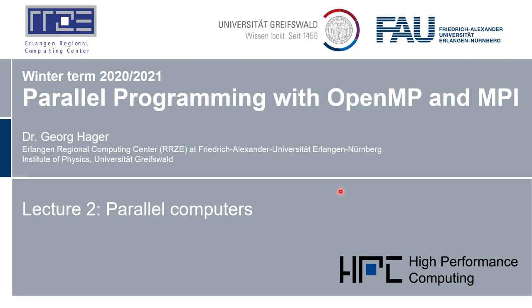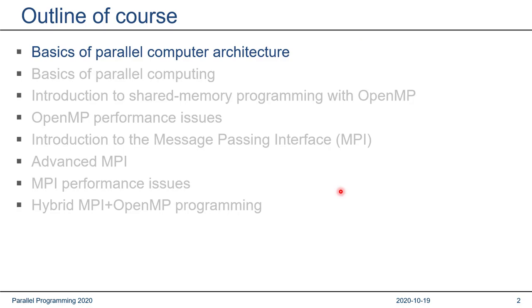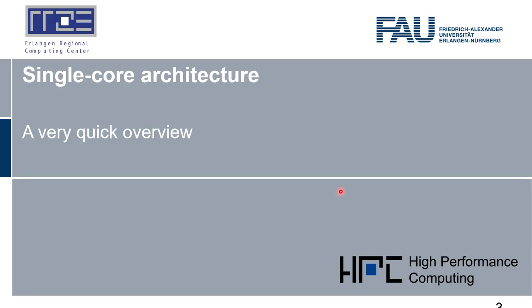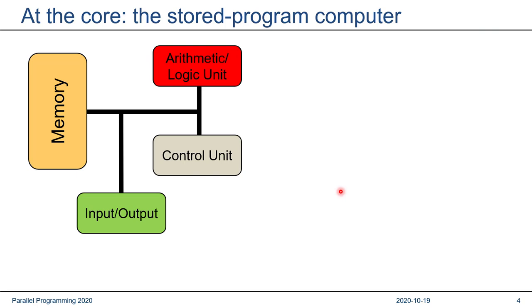Welcome to the second POPFORC20 lecture. Today's topic is Parallel Computers and Parallel Computer Architecture. Before we go into parallelism, we have to cover a little bit about single-core computer architecture, because without that it's not possible to really get insight into the performance properties of programs, be they parallel or not. I'm going to give you a very quick overview of the main features of single-core computer architecture.